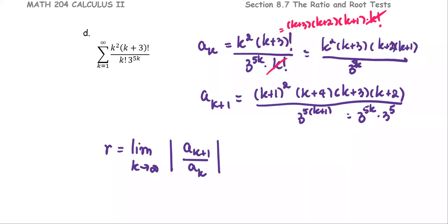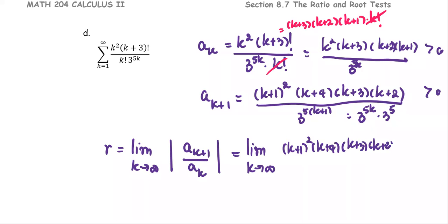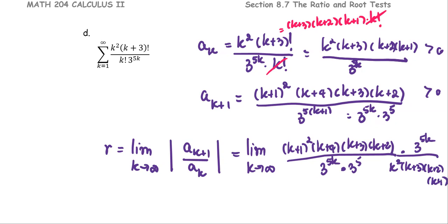Since both a_k and a_{k+1} are greater than zero, we can ignore the absolute value symbol. Writing out the ratio, the numerator is k plus 1 squared times k plus 4 times k plus 3 times k plus 2, over 3 to the 5k times 3 to the 5, multiplied by the reciprocal of a_k. We cancel the common factor 3 to the 5k, then cancel k plus 2 and k plus 2, then k plus 3 and k plus 3.